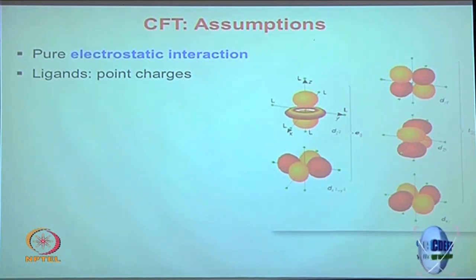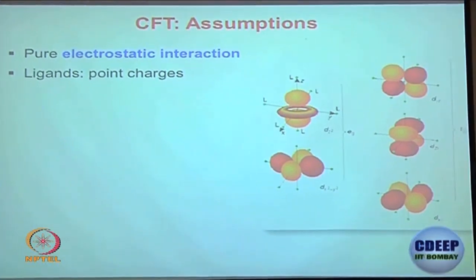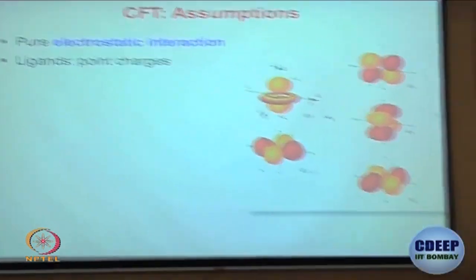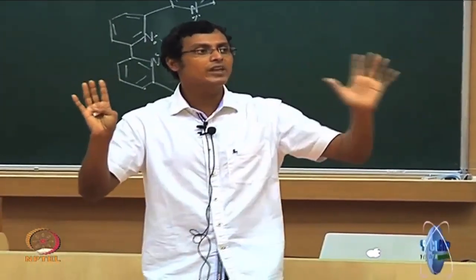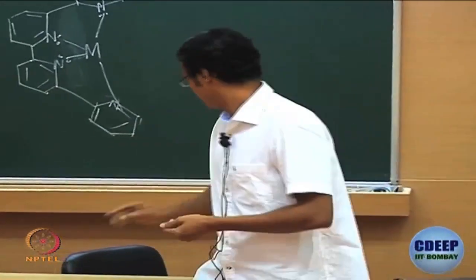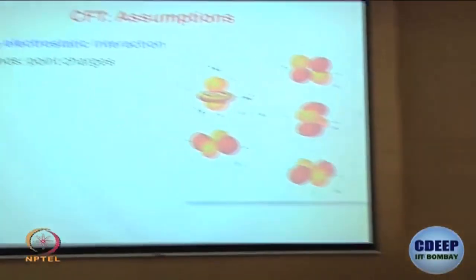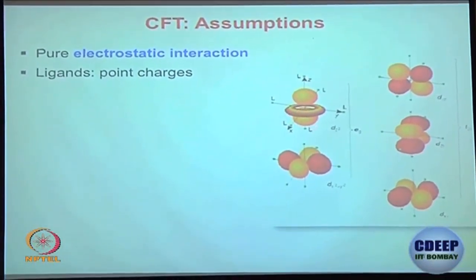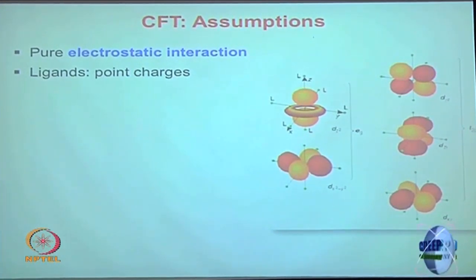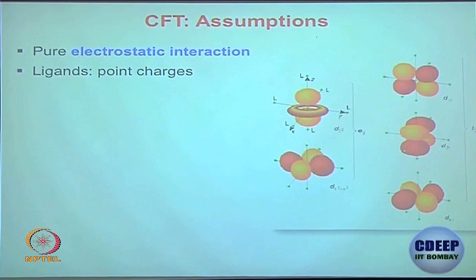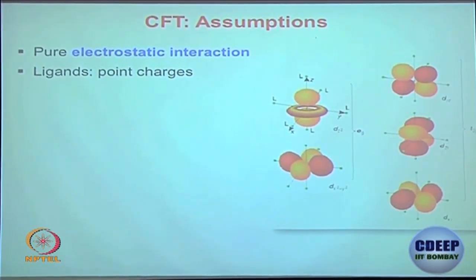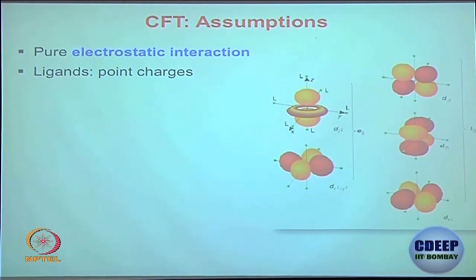For crystal field theory, we first have to look at the orbitals. You have to have it very clear in your mind what we are talking about - the atomic orbitals, mainly the 5 d orbitals, how they are arranged and where they lie along the axes. This is the z-axis. The dz² orbital has electron density along the z-axis - along this one is the x-axis, this is the y-axis, and this is the z-axis.